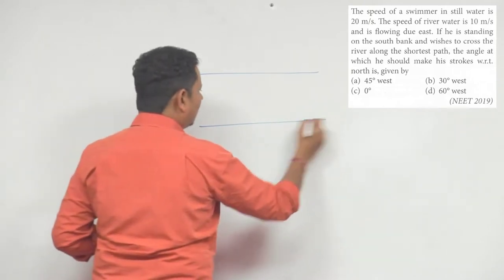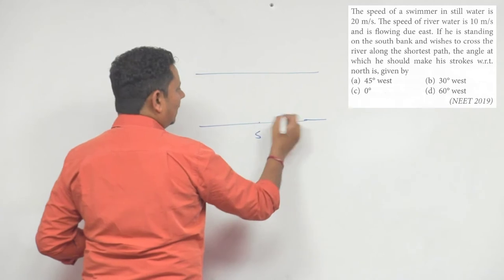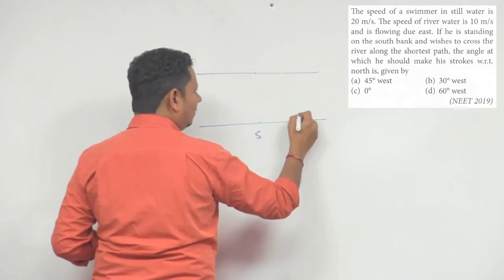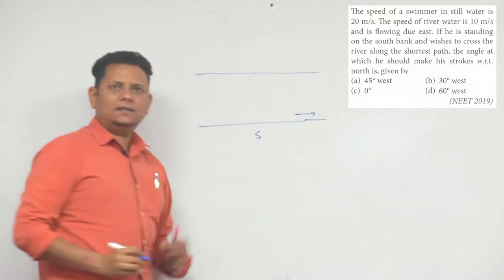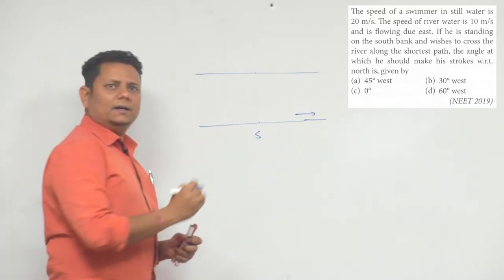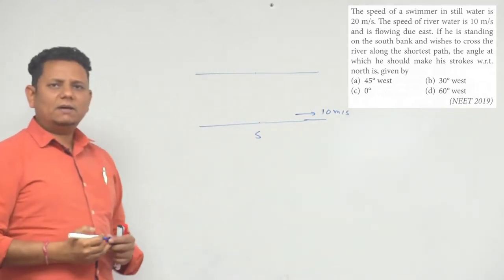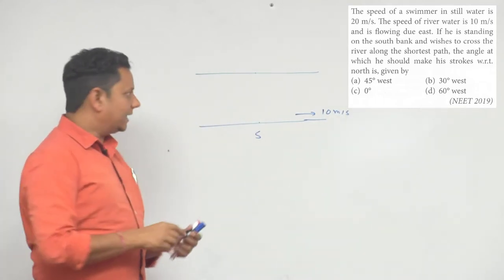The river's south bank, here is the north bank, all right, and the river is flowing east. The river's speed is 10 meters per second. The person's speed is 20 meters per second.